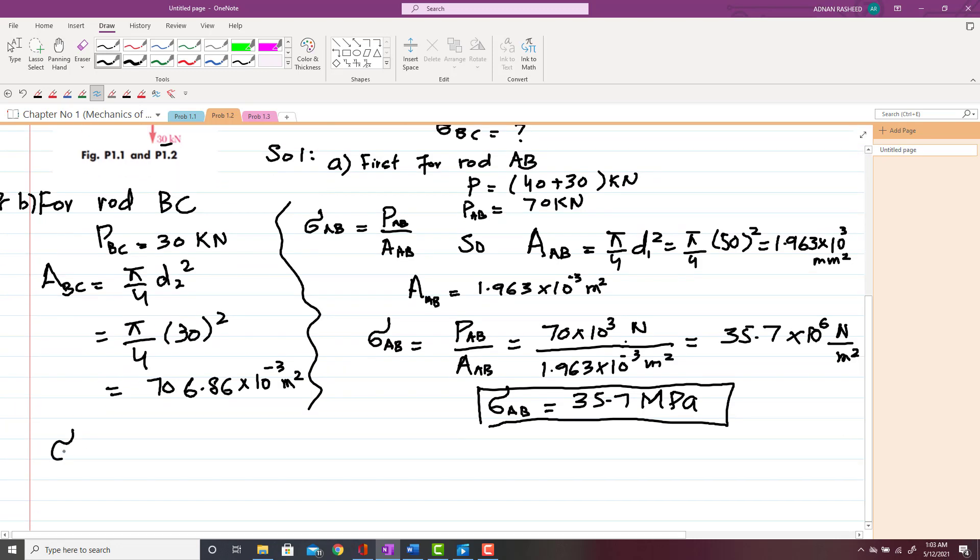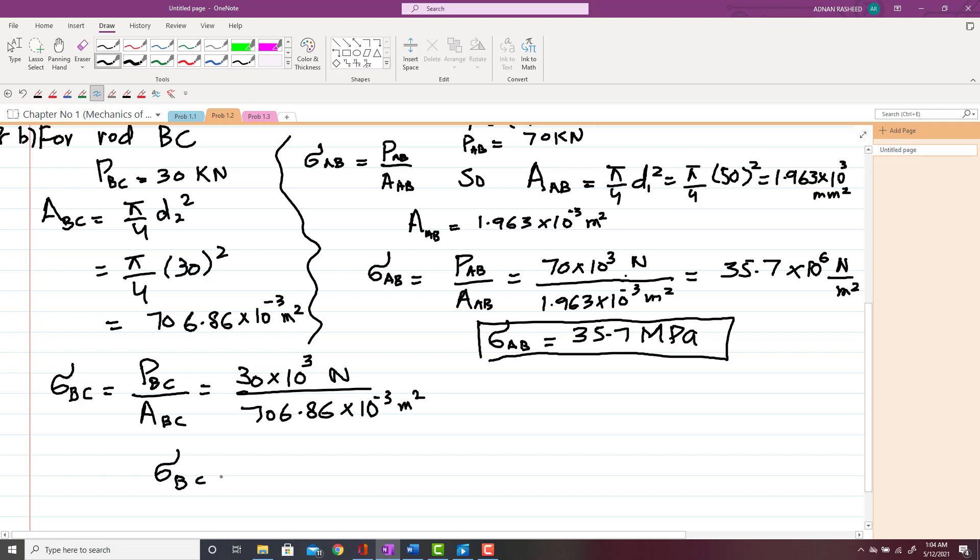Now you have to find sigma_BC, which is equal to P_BC over A_BC. So P_BC is 30 kilonewtons, which is 30 × 10³ newtons, and area will be 706.86 × 10⁻³ m². It will give you sigma_BC equal to 42.4 × 10⁶ pascals, which is 42.4 MPa.